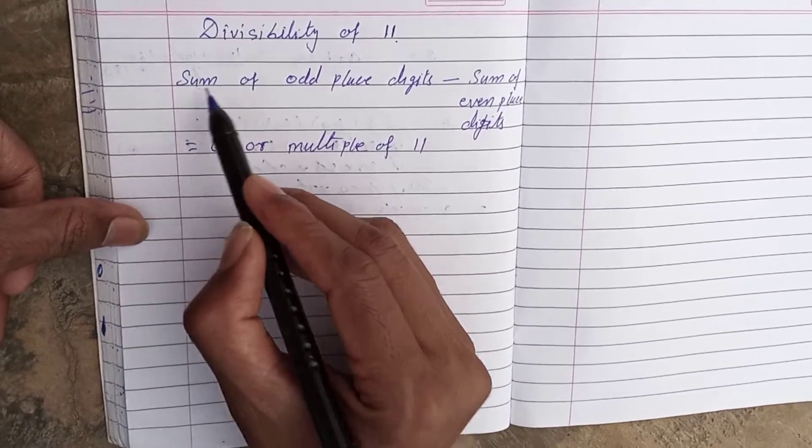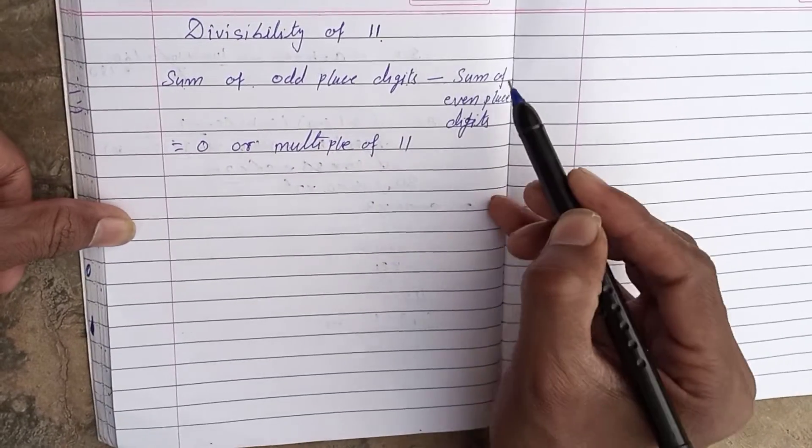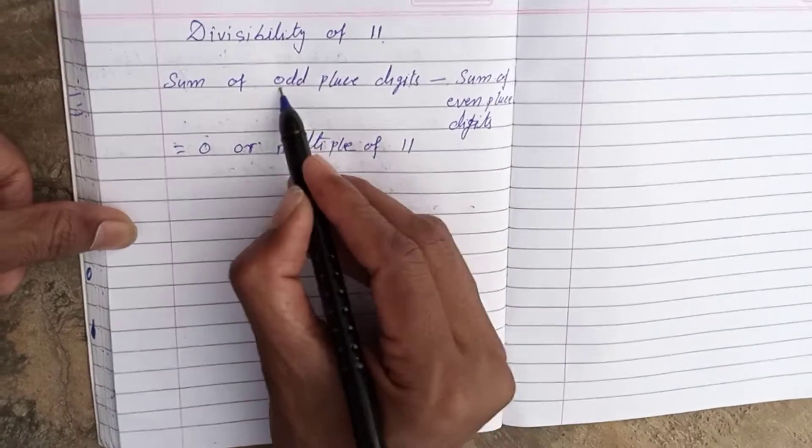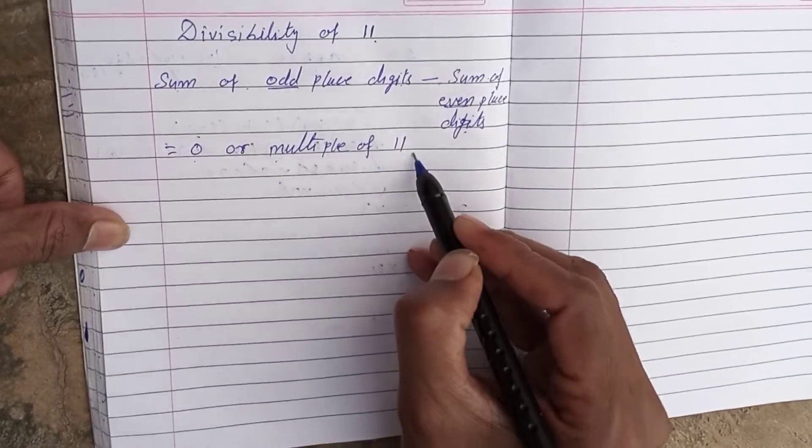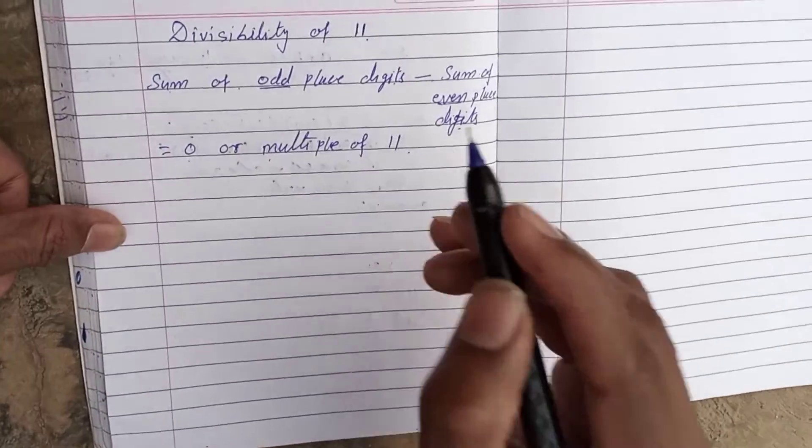First of all, whatever the number given, sum of the odd place digits minus sum of the even place digits. If it is equal to 0 or a multiple of 11, then that number is divisible by 11.